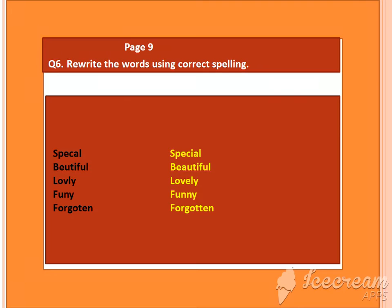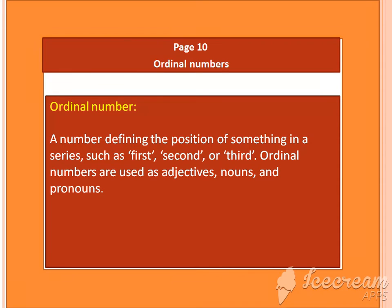Now question number 6, page number 9: rewrite the words using correct spelling. There were some jumbled words with spelling mistakes. I have corrected them for you. Special, beautiful, lovely, funny, forgotten — I have completed and rearranged the correct spellings for you.